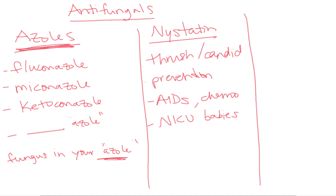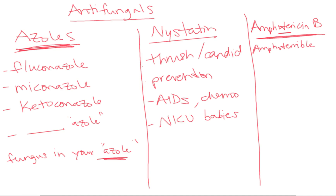The third one I'm going to talk about is Amphotericin. Amphotericin B — and the trick for this is it's 'Amphoterrible.' This is used for very severe fungal infections because the side effects are just terrible — Amphoterrible side effects. Pretty much every body system is affected by Amphotericin B, so it's only used for very severe fungal infections.